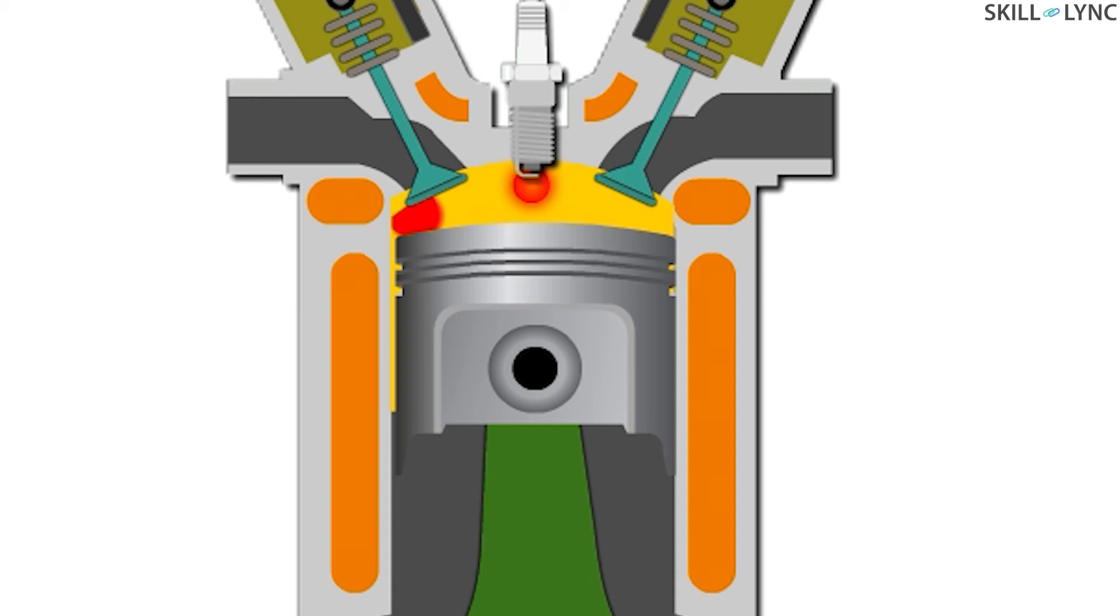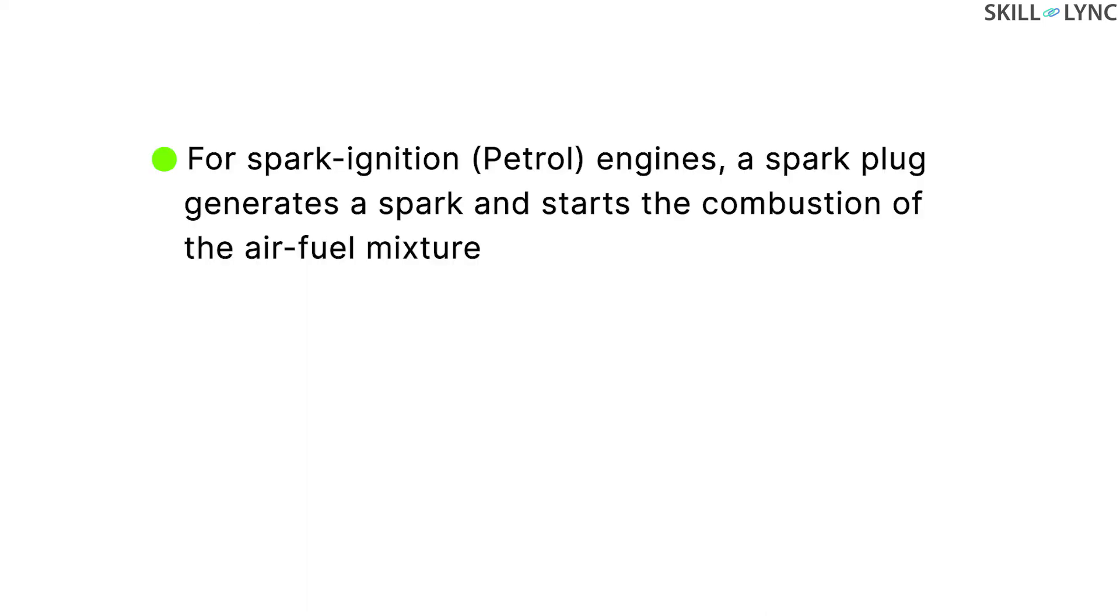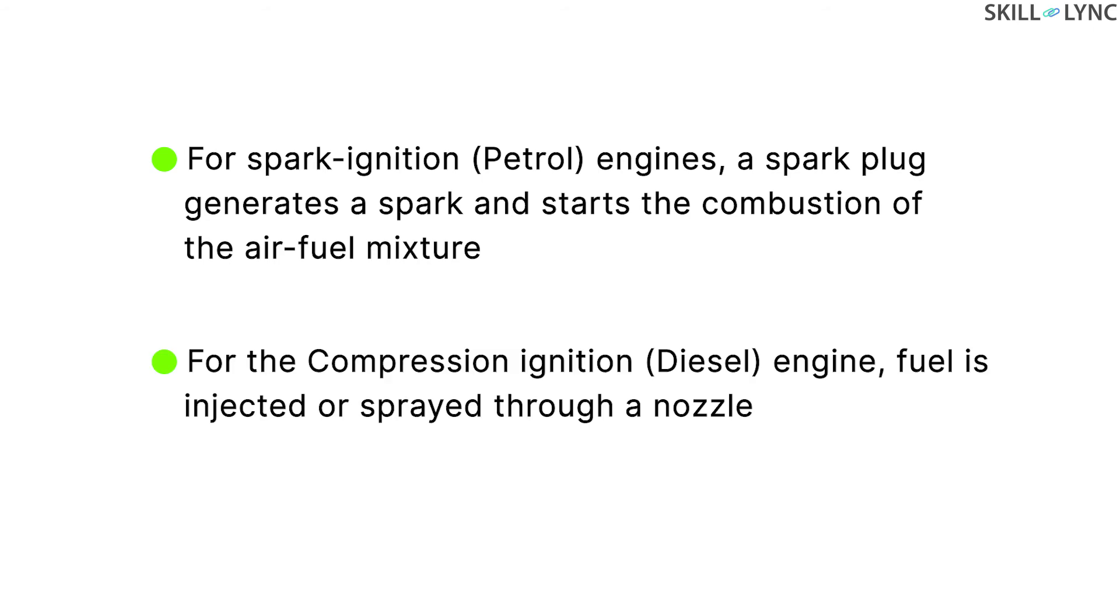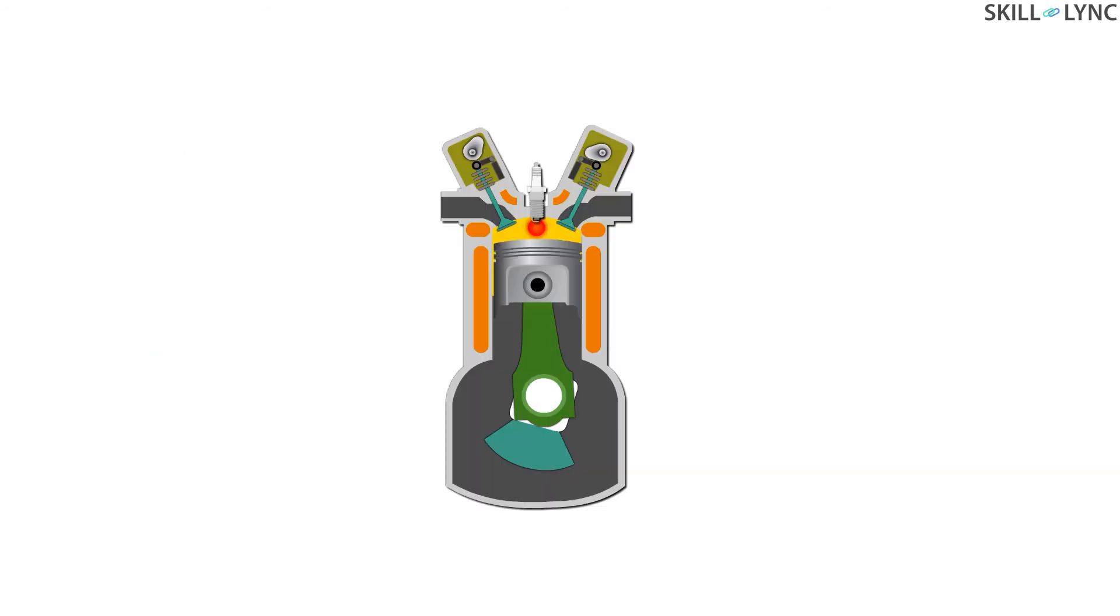When the piston is very close to TDC, the combustion process is initiated inside the combustion chamber. For spark ignition engines, a spark plug generates a spark and starts the combustion of the air fuel mixture. For compression ignition engines, fuel is injected or sprayed through a nozzle. As the combustion is initiated, gases are generated inside the combustion chamber which results in a significant increase in pressure. Because of this increasing pressure, the piston is pushed down from the TDC to the BDC.